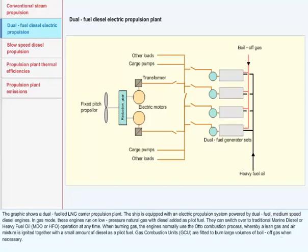A lean gas and air mixture is ignited together with a small amount of diesel as a pilot fuel. Gas combustion units, GCU, are fitted to burn large volumes of BOG when necessary.